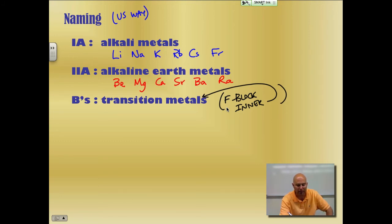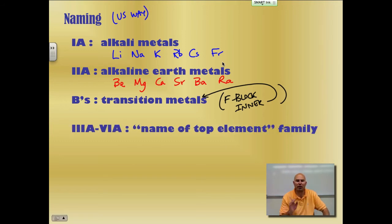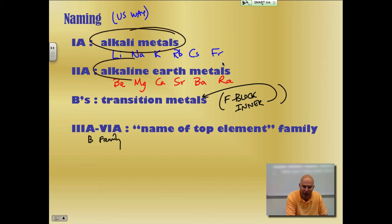So that's the Bs. Groups 3A through 6A, and again, that's in the U.S. way, in the P block. It's the name of the top element family. So, for example, we have boron family. It doesn't have a specific cool name like alkali metals or alkaline earth metals. Boron family, carbon family, nitrogen family, oxygen family. Those are 3A through 6A.